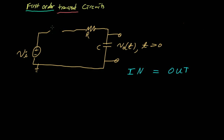Let me redraw the circuit with the switch closed. This is what the circuit looks like at time equals zero — our switch has now been closed. This whole node on the left side of the resistor is going to be at voltage VI, since the minus side of the voltage source is grounded. On the other side of the capacitor, that's also ground. So we only have one unknown node voltage, right here, and it just so happens that this node voltage is going to be V out.